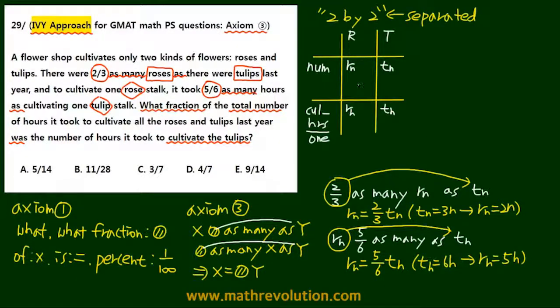Now we can plug in these values in the table. So this was 2n, T was 3n, and Rh was 5h, and Th was 6h.